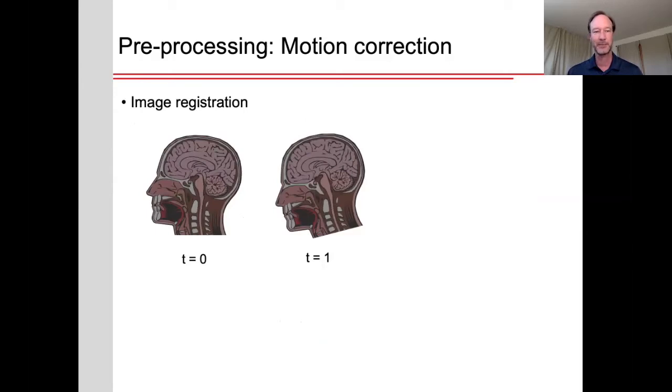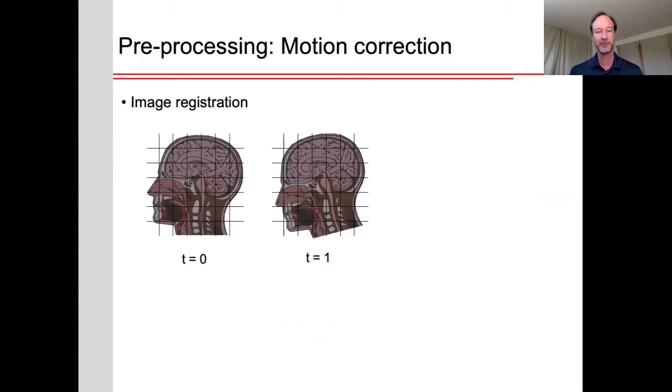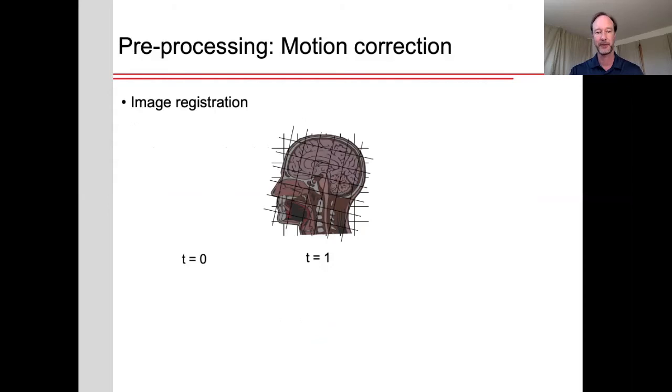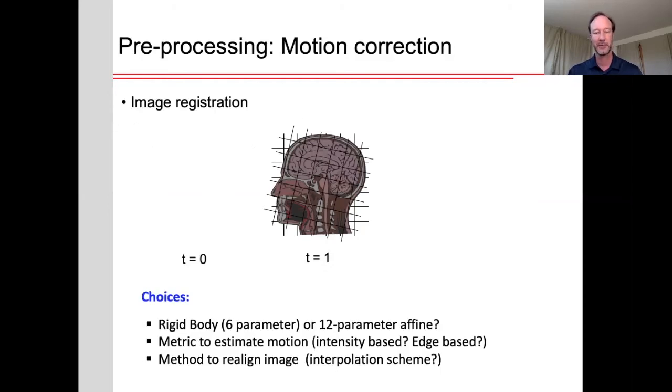How do we correct for this movement? One step is image registration. So for example, let's say that the image of the brain has moved from one time point to the next, we have some grid that we've acquired the data on. The image registration would be to pick one as the baseline volume and then register those to that baseline volume. There's a few decisions we have to make. First, are we going to just treat this as a rigid body that is a model only six parameters for this registration? Or are we going to allow for some shearing and some stretching that is a 12 parameter affine registration? Next, what metric are we going to use to estimate the motion? Are we going to use intensities? Are we just going to look at the edges? Are we going to look at the least squares difference of intensities or some mutual information? What cost function are we going to use? And then finally, once we've determined what the movement was, how are we going to realign the images? That is, how are we going to interpolate the data?